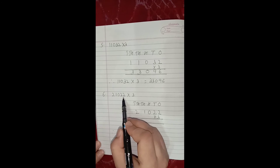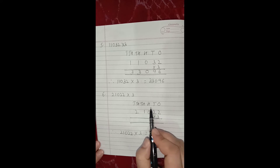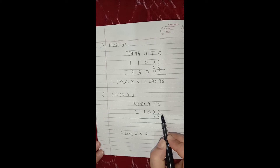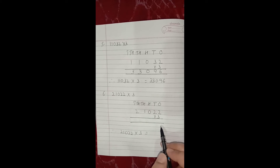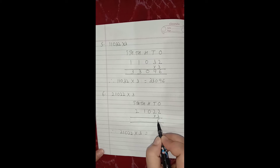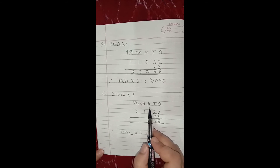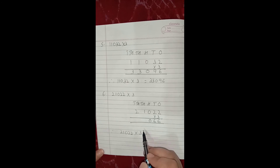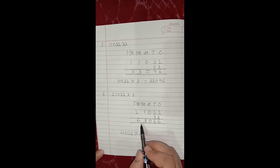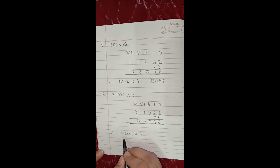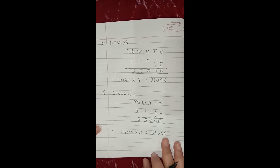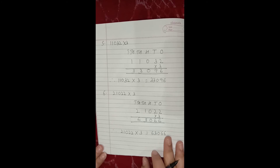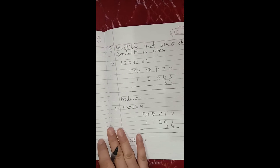Now the last sum of this question: 21,022 multiply by 3. First of all we will write the 5 places because it's a 5 digit number. Then we will write the multiplicand — the first number — then the second number, which is written after the multiplication sign, that is the multiplier. Now we will find the product by multiplying. Ones: 3 2's are 6. Tens: 3 2's are 6. Hundreds: 3 0's are 0. Thousands: 3 1's are 3. And lastly 10,000: 3 2's are 6. So our answer is 63,066. Therefore 21,022 multiply by 3 is equals to 63,066. So dear students, this is how you are supposed to do the first question — multiplication by one digit number. Now let us move on to the second question of the same exercise.